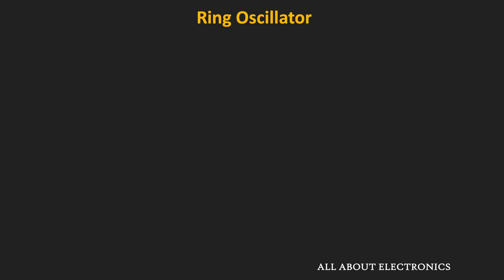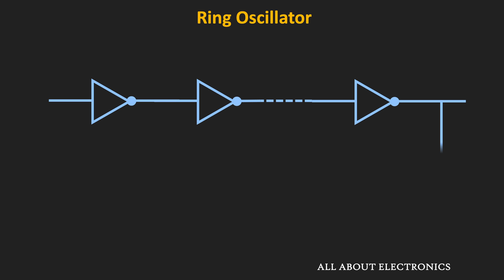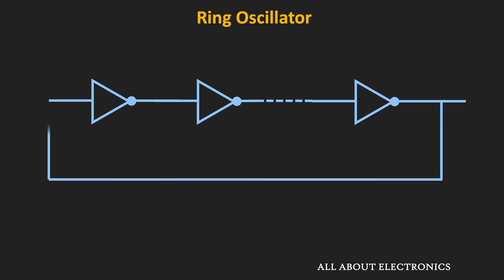In the inverter or NOT gate, if we apply a logic 0 as an input, then at the output we will get logic 1. Likewise, when we apply logic 1 as an input, then at the output we will get logic 0. So when multiple such inverters are cascaded and the output is fed back to the input side, then this circuit will act as a ring oscillator.